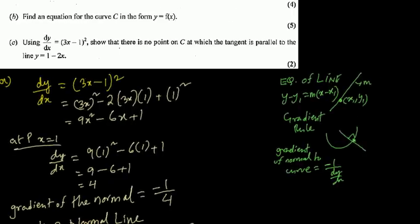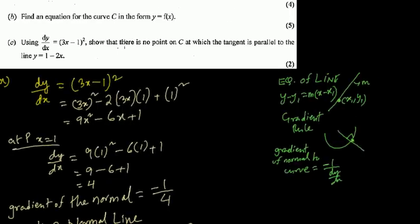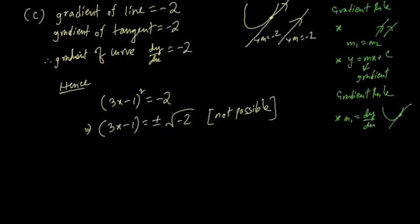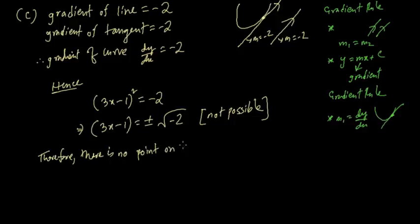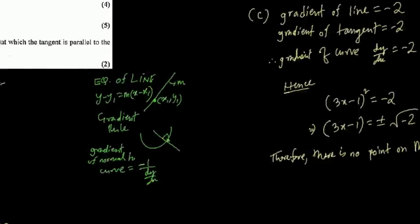Since we cannot calculate such a point, the point is unreal. This shows there is no point on the curve where the tangent is parallel to y = 1 - 2x. Therefore there is no such point on the curve.